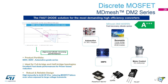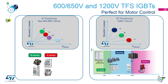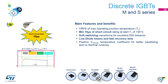High dV/dt ruggedness up to 40 V/ns allows reliable performance even when exposed to large voltage transients such as noise and harmonics on AC power lines. ST's trench field stop IGBTs feature breakdown voltages up to 650 V or 1200 V and cover a wide range of performance requirements. The three IGBT series — H, M, and S — are perfect for motor control due to their different trade-offs between dynamic and static losses. The M series IGBTs have been designed using the third generation of ST's trench gate field stop technology, with a maximum junction temperature of 175°C.